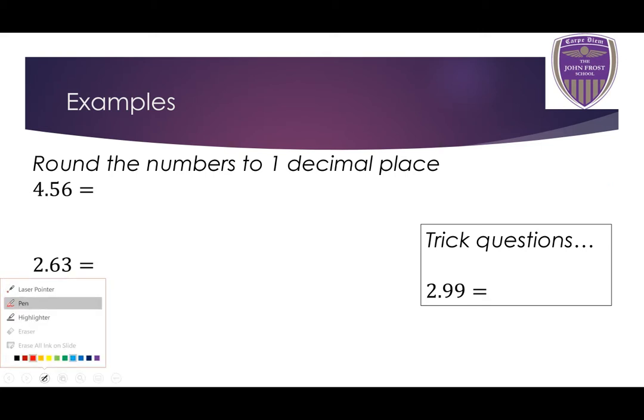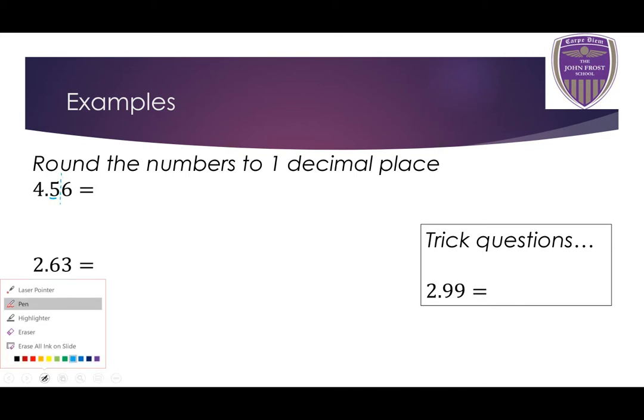First, we want to round 4.56 to one decimal place. I need to find which number is in the first decimal place — in this case, it is the 5. The 5 is the first decimal place. So I'm going to draw a line after the 5, and then ask myself: is the number after that line 5 or bigger? If it is, I need to round the number in the first decimal place up by 1.